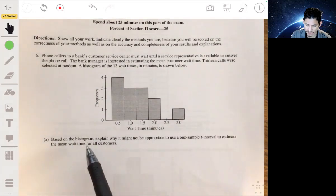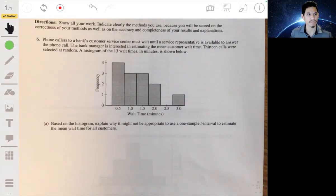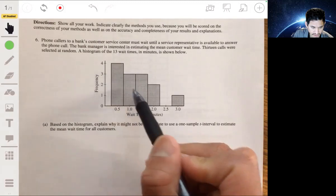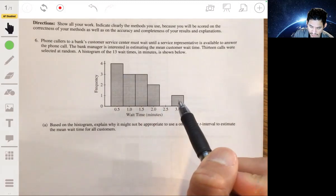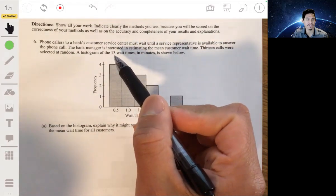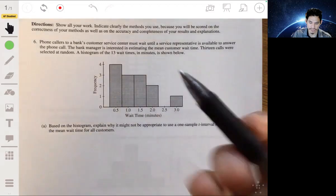Looking at this histogram, explain why it might not be appropriate to use a one sample t interval to estimate the mean wait time for all customers. Let's remember what the conditions are for being able to use a one sample t interval. Right off the bat, you can see that it's clearly skewed to the right.